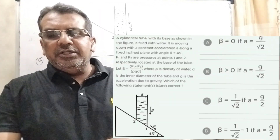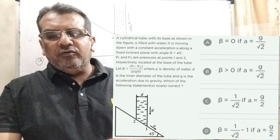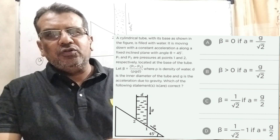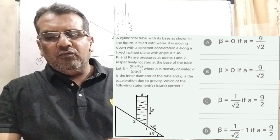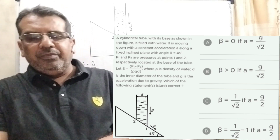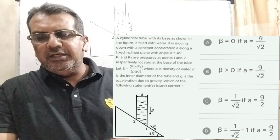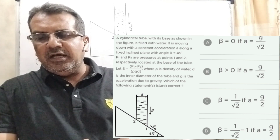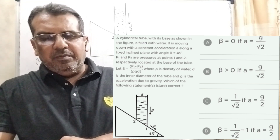Now here is the question. A cylindrical tube with its base as shown in the figure is filled with water. It is moving downward with a constant acceleration along a fixed inclined plane with angle theta equal to 45 degrees. Here P1 and P2 are pressure at point 1 and 2 respectively, located at the base of the tube. Beta is equal to P1 minus P2 upon rho·d·g, where rho is the density of water, d is the inner diameter of the tube and g is the acceleration due to gravity.